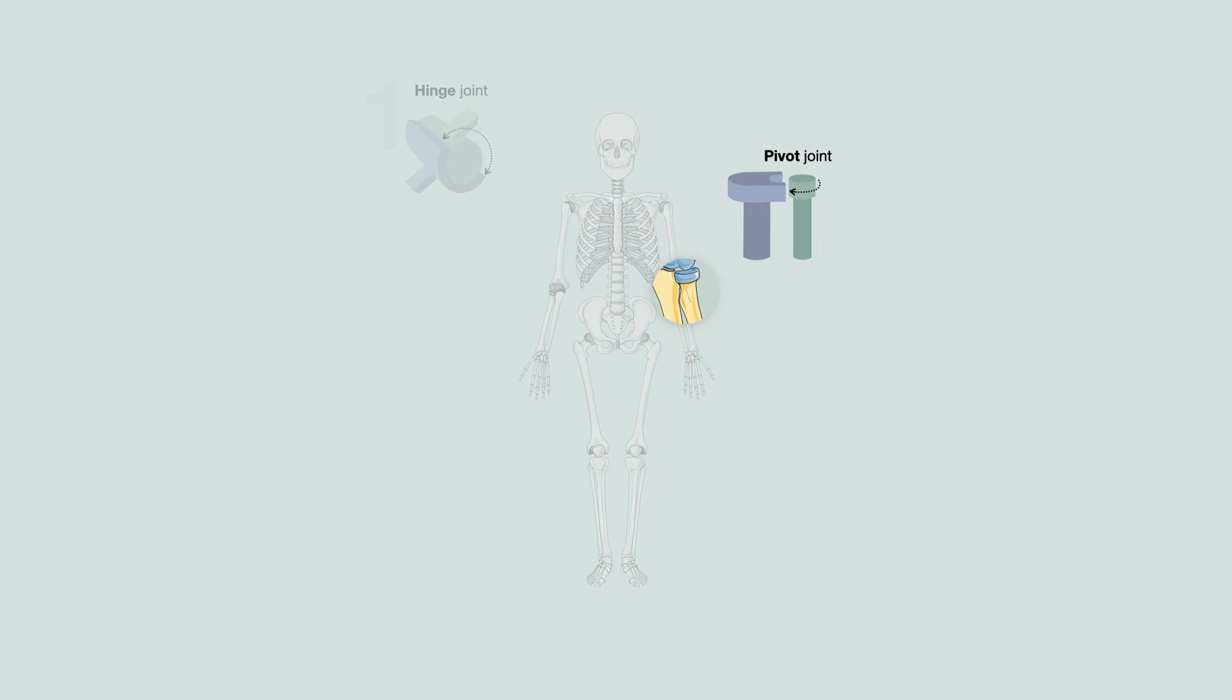Pivot joints occur when one rounded edge of a bone articulates with a rounded edge of another and has a uniaxial movement. An example is the proximal radioulnar joint pictured here, alternatively the atlanto-axial joint between C1 and C2.